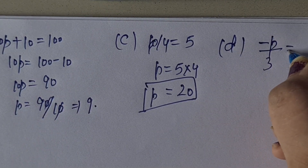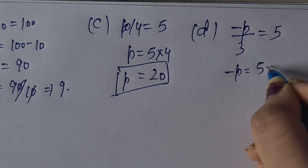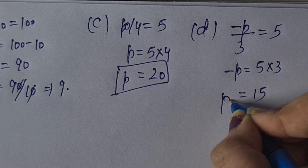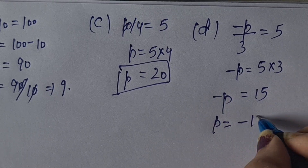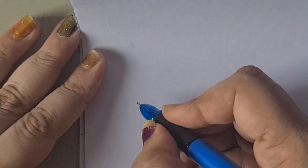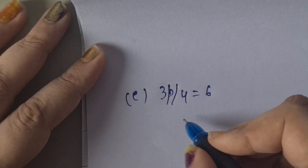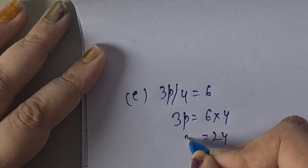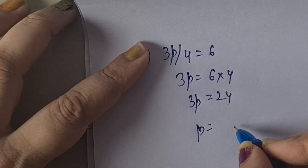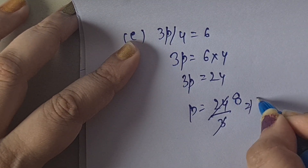D part: minus P upon 3 = 5. First, 3 goes to multiply: minus P = 5 into 3 = 15. We need P, not minus P, so the minus sign moves to the right: P = minus 15. E part: 3P upon 4 = 6. Division converts to multiplication: 3P = 6 into 4 = 24. So P = 24 by 3 = 8.